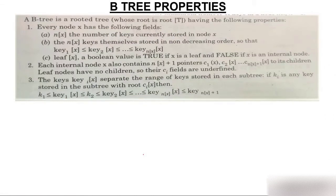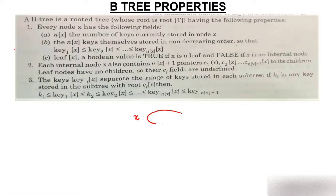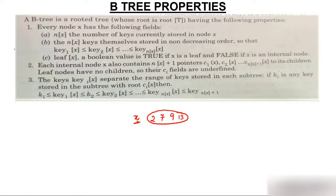Now comes the very important part — the properties of B-tree. If a node is represented by x, then n(x) is the number of elements in x. For example, if a node contains 2, 7, 9, and 13, then n(x) equals 4.